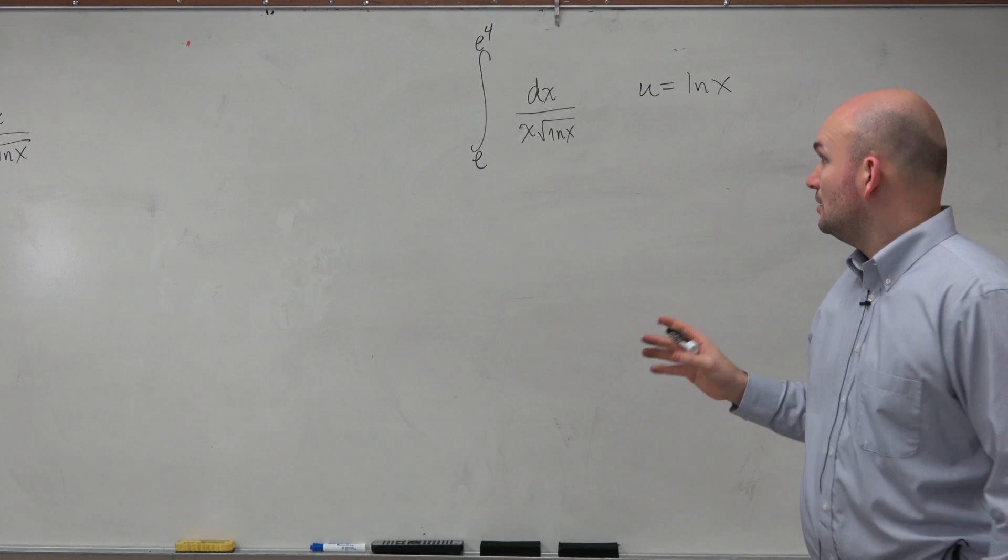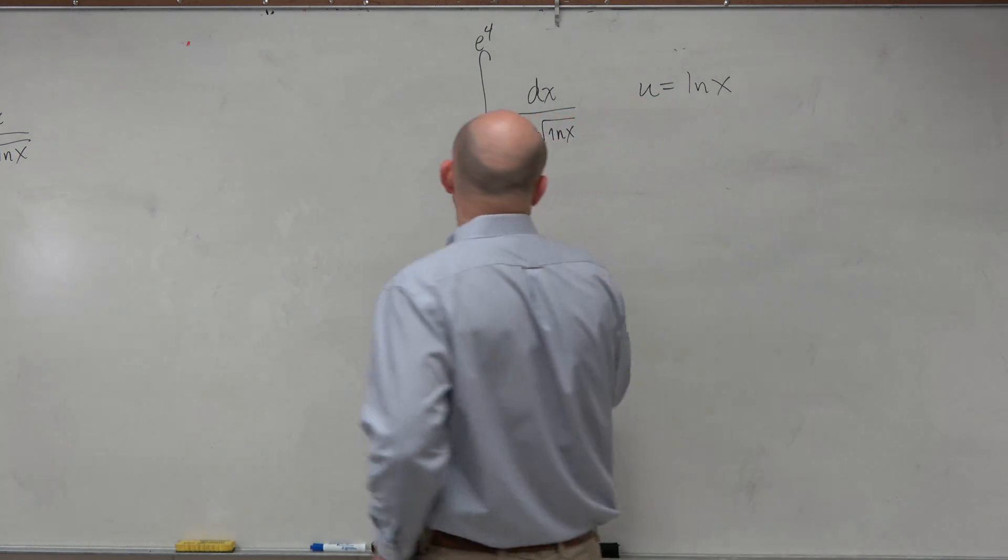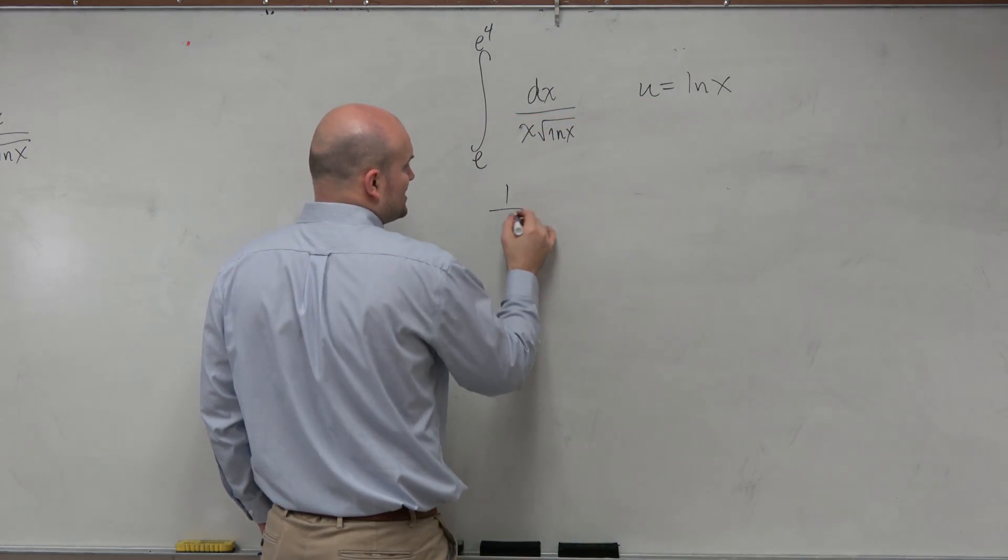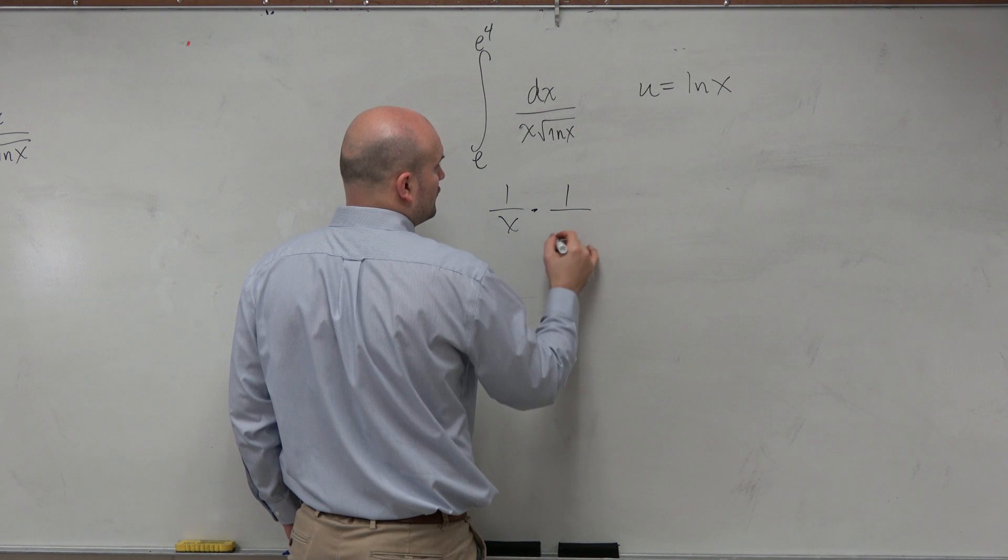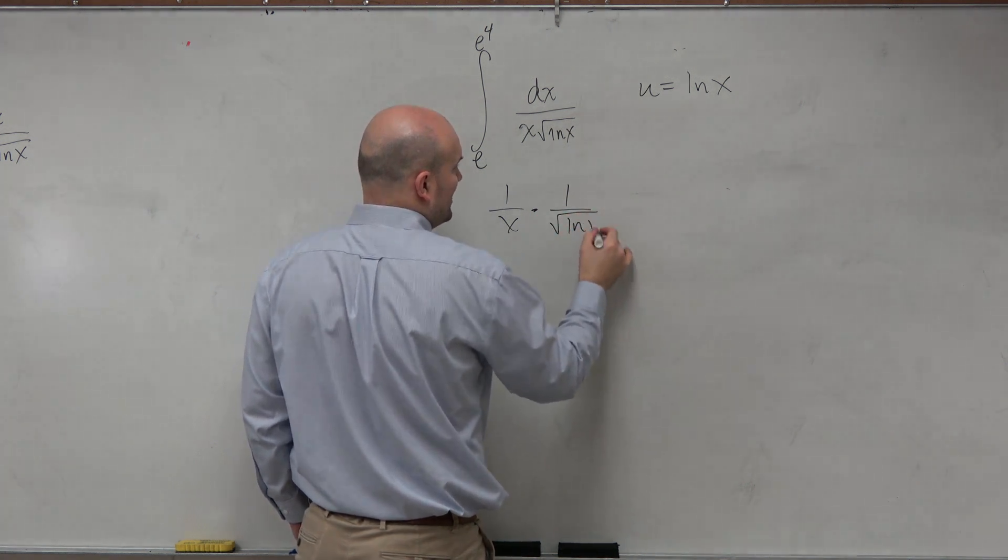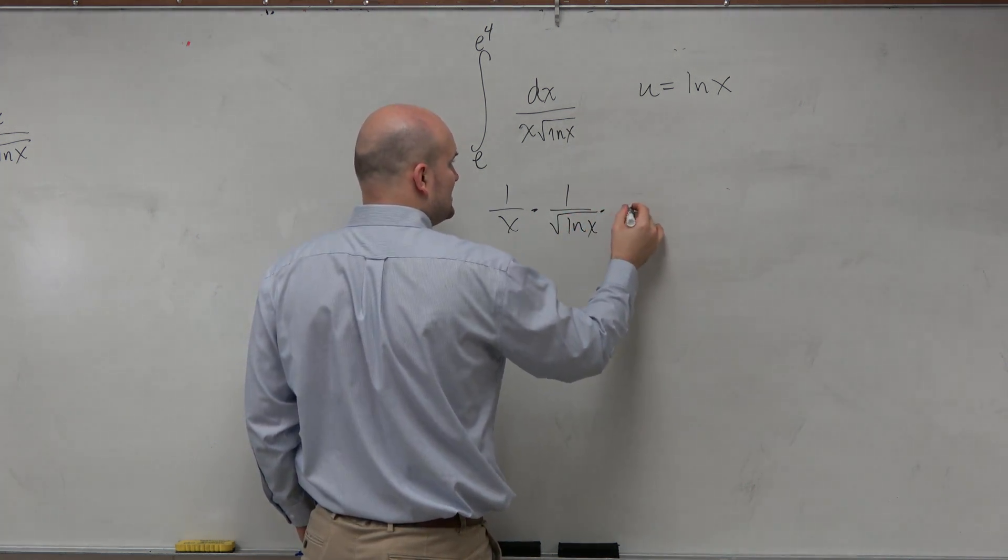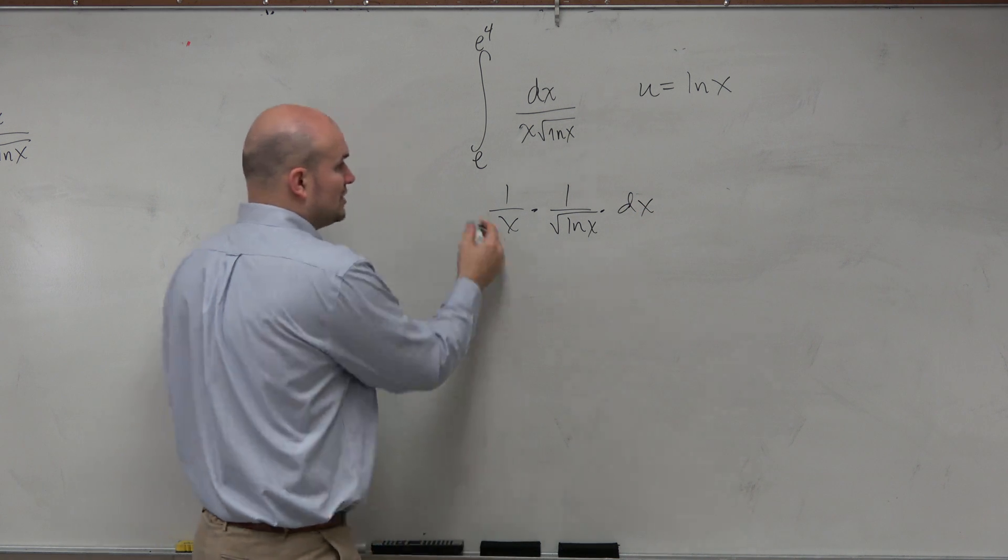Yes? OK, so let's maybe rewrite this. We could rewrite this as 1 over x times 1 over square root of ln of x times dx. Would you guys, would you agree?